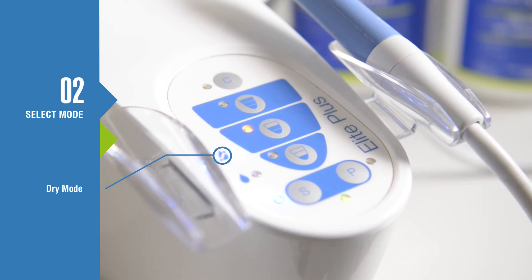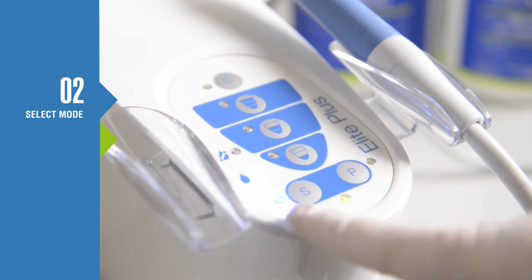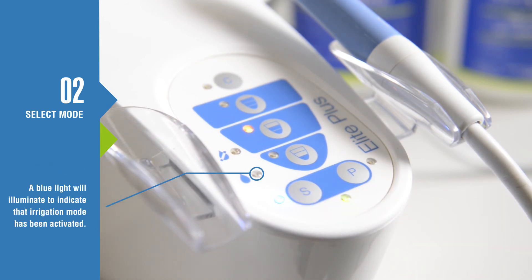Pressing S will toggle the dry mode, irrigation mode, and back to normal scaling mode. If there is no water coming from the scaler, check to see that you have the irrigation mode turned on.